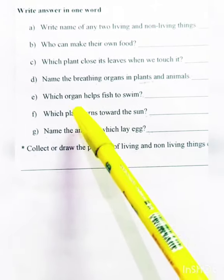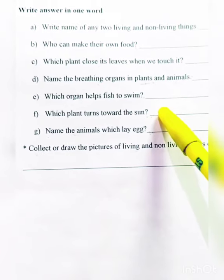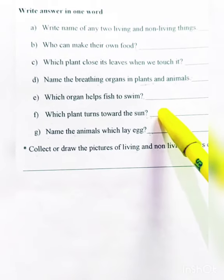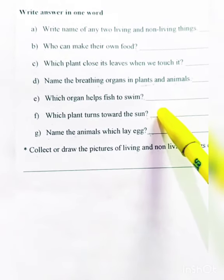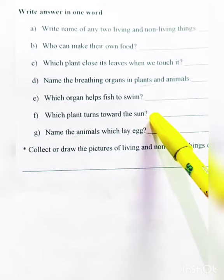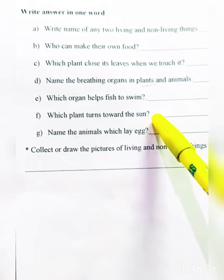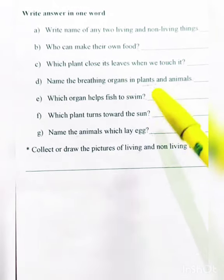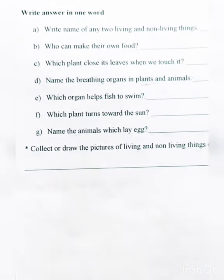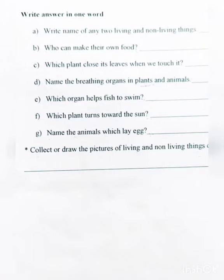Which plant turns towards the sun? The sunflower turns its face towards the sun. That is why it is called the sunflower.